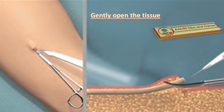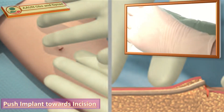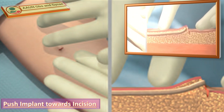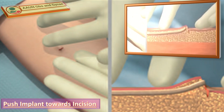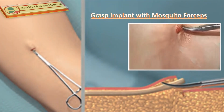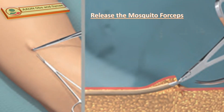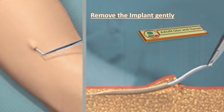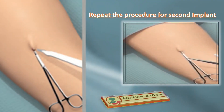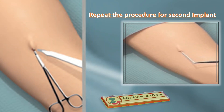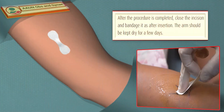Use a scalpel to very gently open the tissue and capsule around the implant. Push each implant gently with your fingers toward the incision. When the tip of the implant is visible in the incision, grasp it with the mosquito forceps. Then grasp the end of the implant with a second forceps called the cryo forceps, release the mosquito forceps, and remove the implant gently. Repeat this procedure for the second implant and measure the length of the removed implant — it should be 43 mm — to confirm both Jadelle implants have been removed.